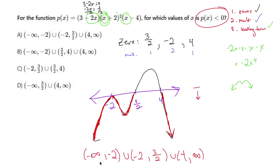So the answer is negative infinity to negative 2, union negative 2 to 3 over 2, union 4 to infinity. That's going to be my answer.